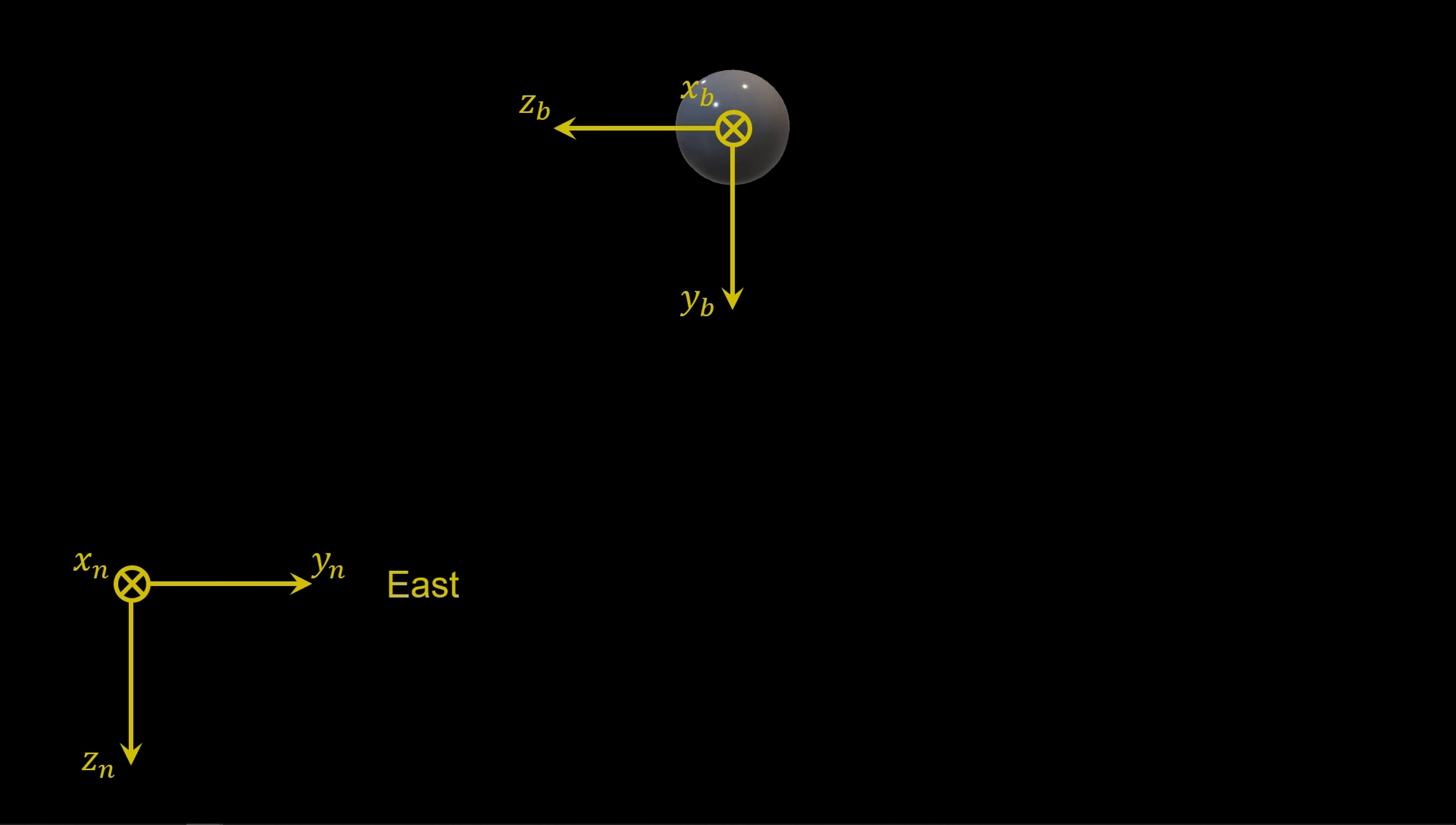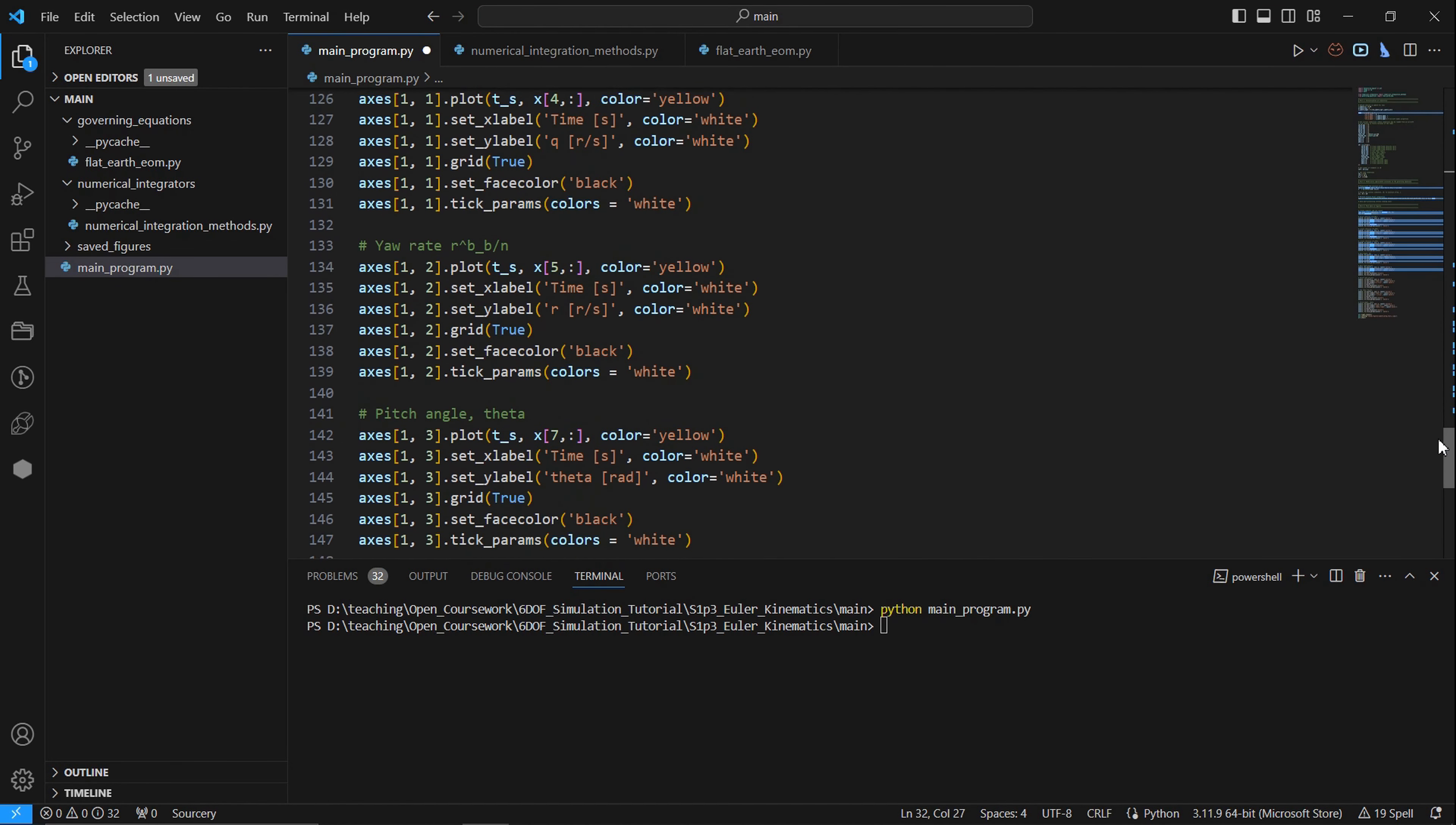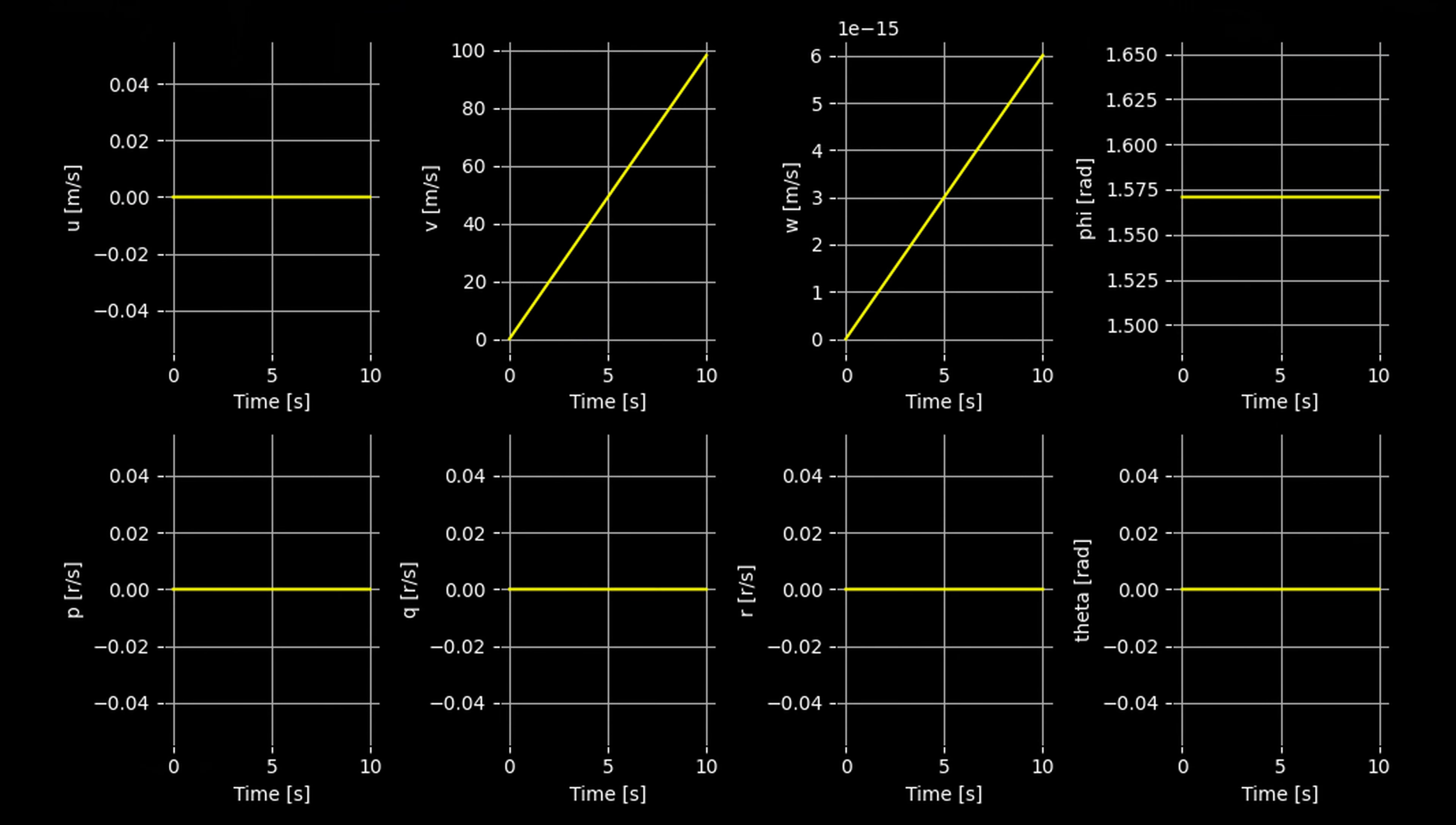Now let's test the sphere if it were initialized with its y-axis pointed down. To do this, we simply set the roll angle to pi over 2 and rerun the simulation. Set roll to positive 90 degrees. We'll save the plot with the underscore 2.